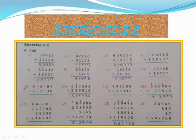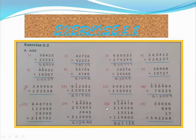Eleventh one you have to do. Twelfth: 5,36,484 plus 76,525 — answer equals 6,13,009. Thirteenth one you have to do. Fourteenth: 64,998 plus 2,33,803 plus 2,645 plus 3,12,000 — answer equals 6,13,446. Fifteenth: 5,18,478 plus 2,16,324 plus 15,516 plus 1,10,800 — answer equals 8,61,118.